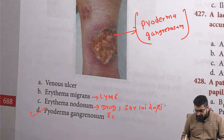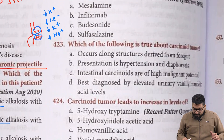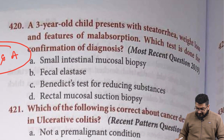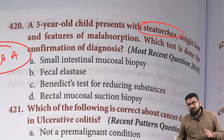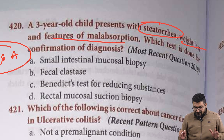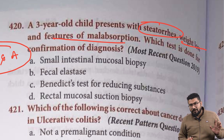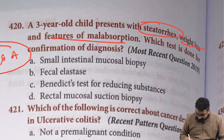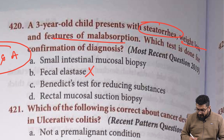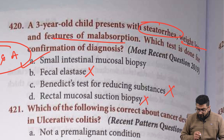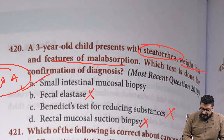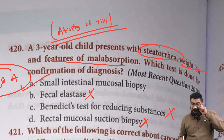A three-year-old child presents with steatorrhea — fatty stool when stool fat content is more than 7g — weight loss, and features of malabsorption. For confirmation of any malabsorption syndrome, a biopsy is performed. For malabsorption affecting the small intestine, a small intestinal biopsy is done. On biopsy you will see villous atrophy, hyperplasia of crypts, and lymphocyte infiltration when due to an autoimmune condition like celiac sprue.